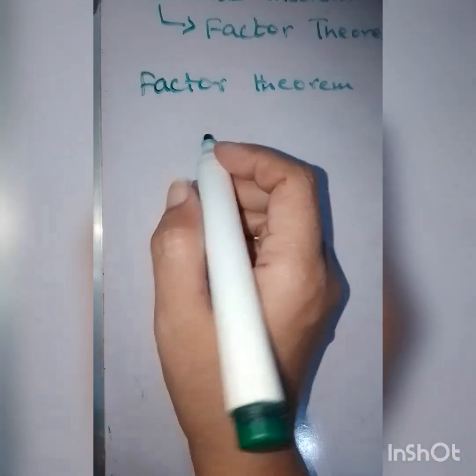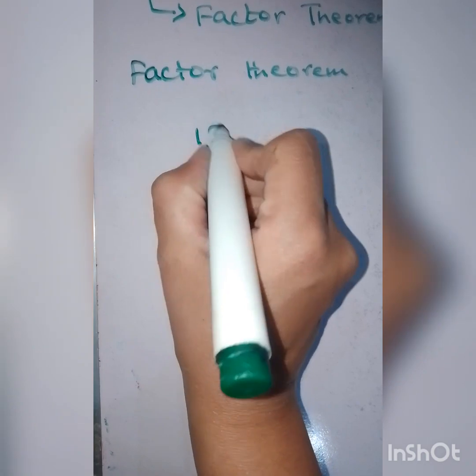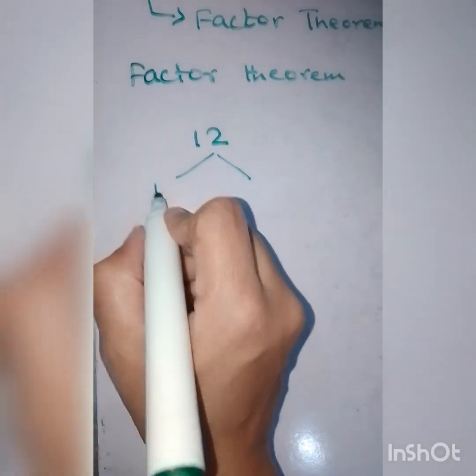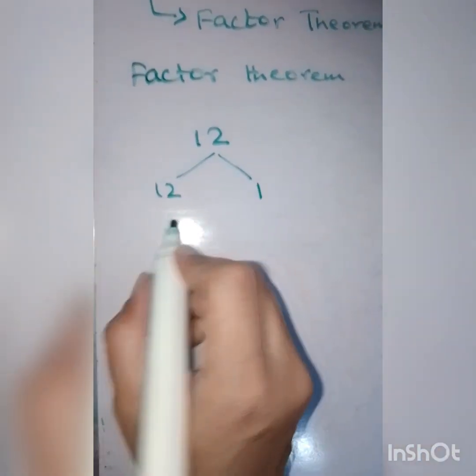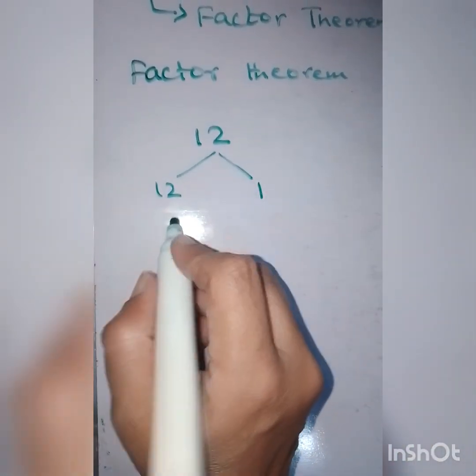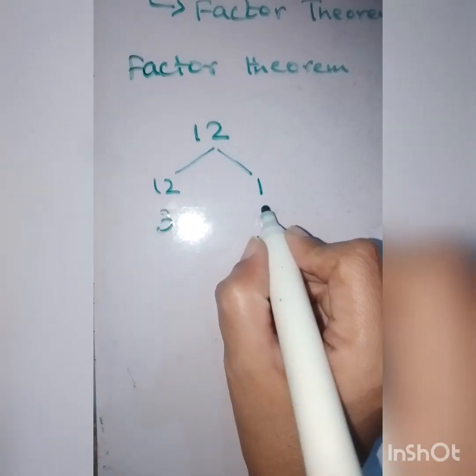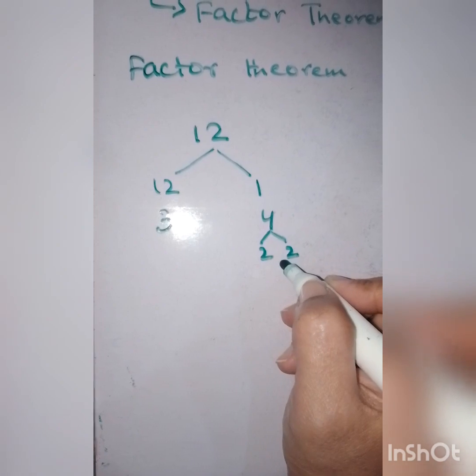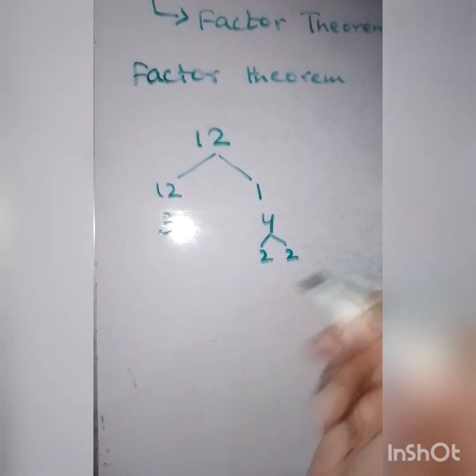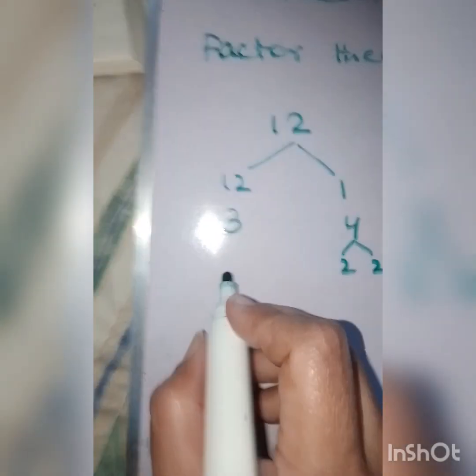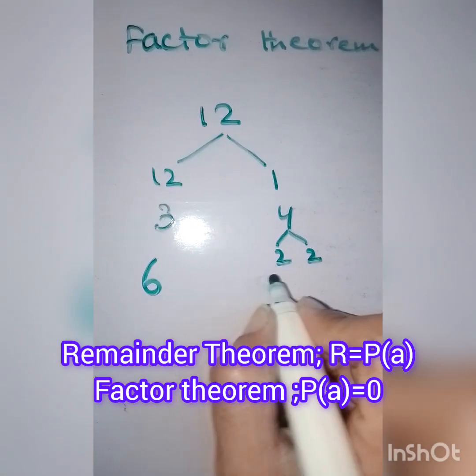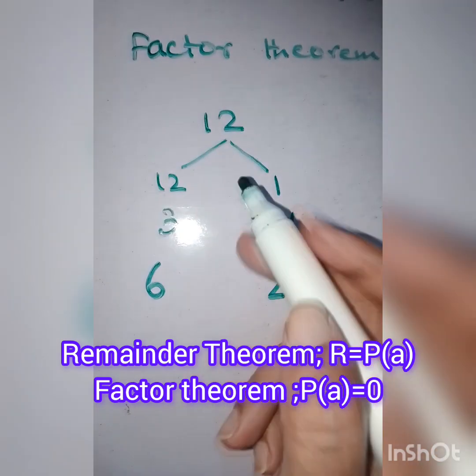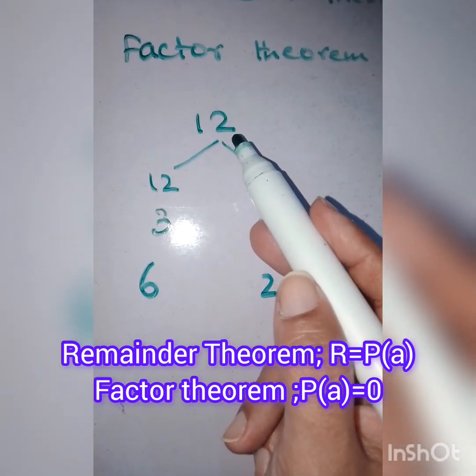Let's have an example in mathematical form. If we have the number 12, we can break it into factors: 12 times 1, then 3 times 4, and 4 can be broken into 2 times 2, and another factor is 6 times 2. If we divide it, it will be completely divisible by these factors one by one, leaving a remainder of zero.